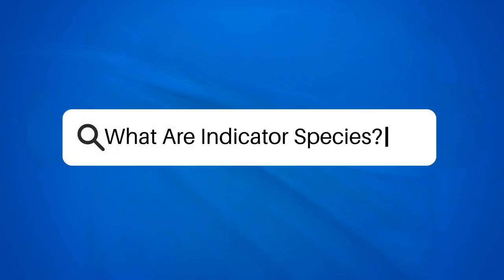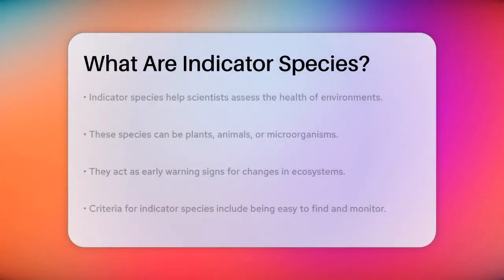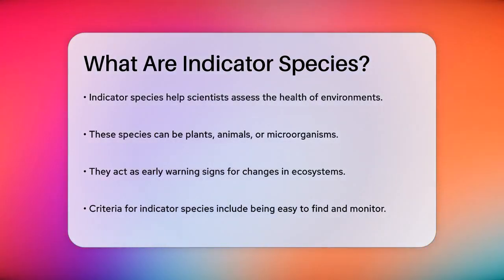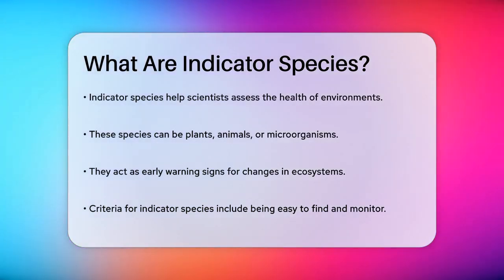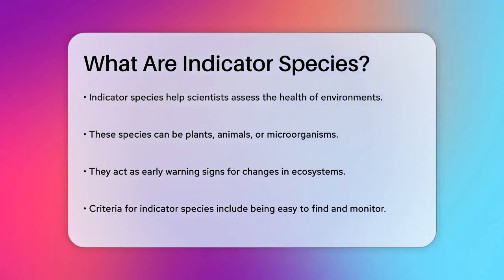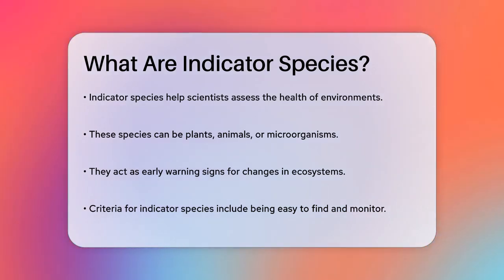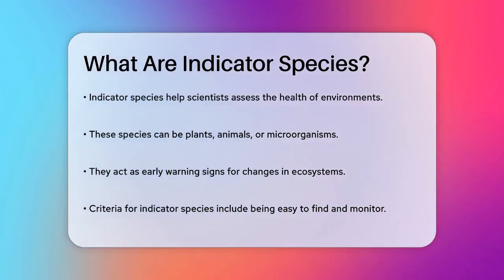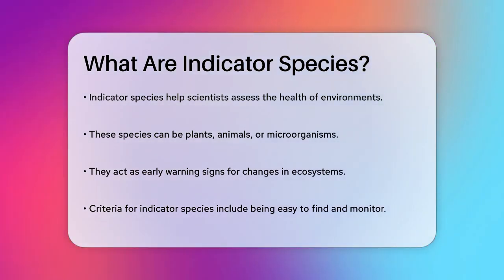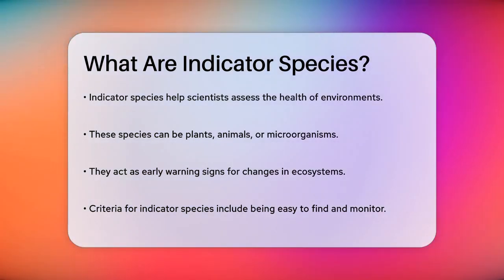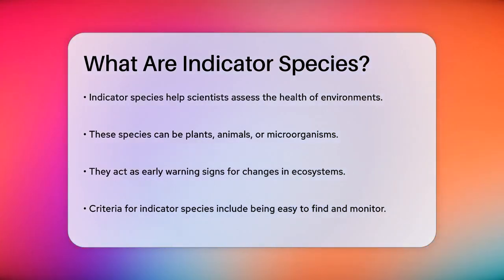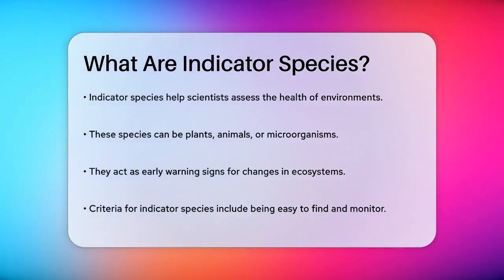What are indicator species? Have you ever wondered how scientists figure out if an environment is healthy or not? One way they do this is by looking at something called indicator species. What exactly are these indicator species? An indicator species is a plant, animal, or microorganism that tells us a lot about the environment it lives in. These organisms are like nature's early warning signs — they can signal whether there are positive or negative changes happening in their ecosystem.